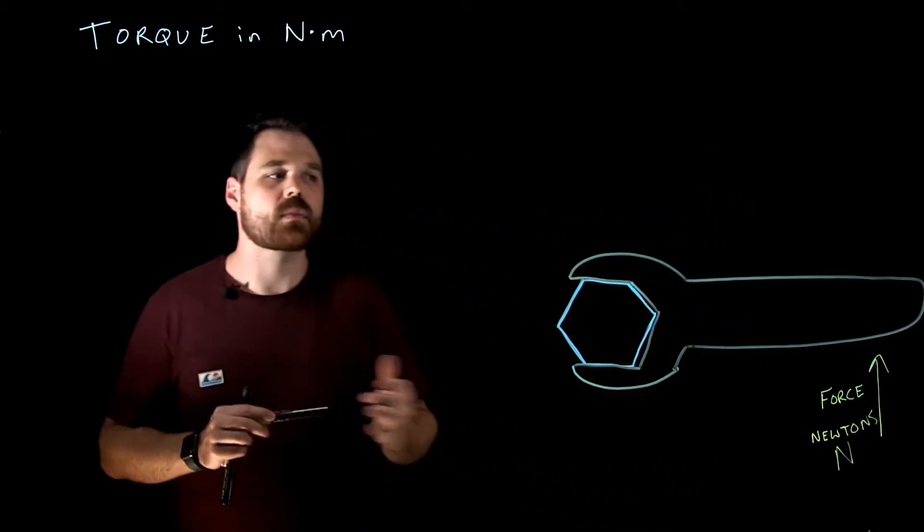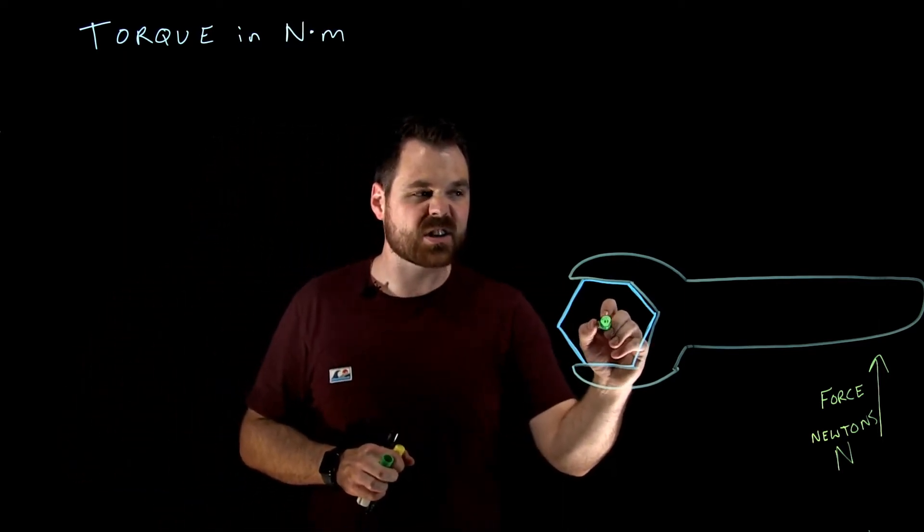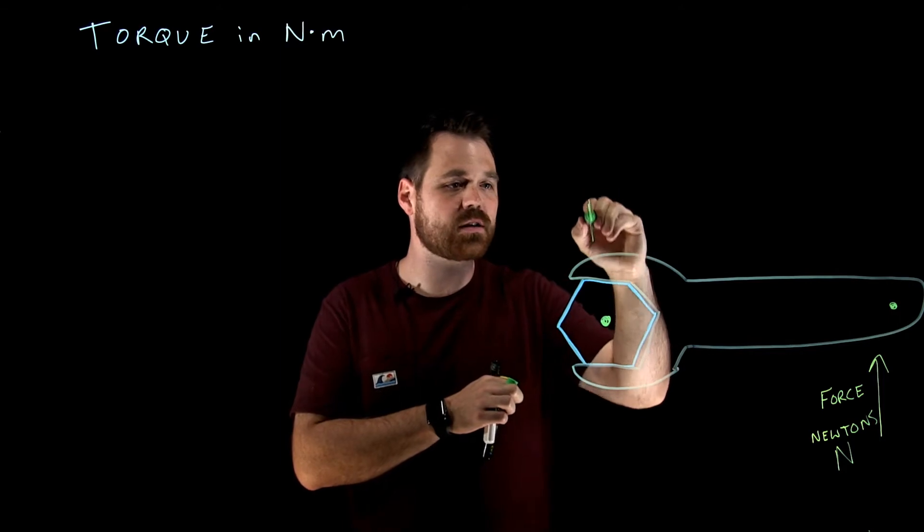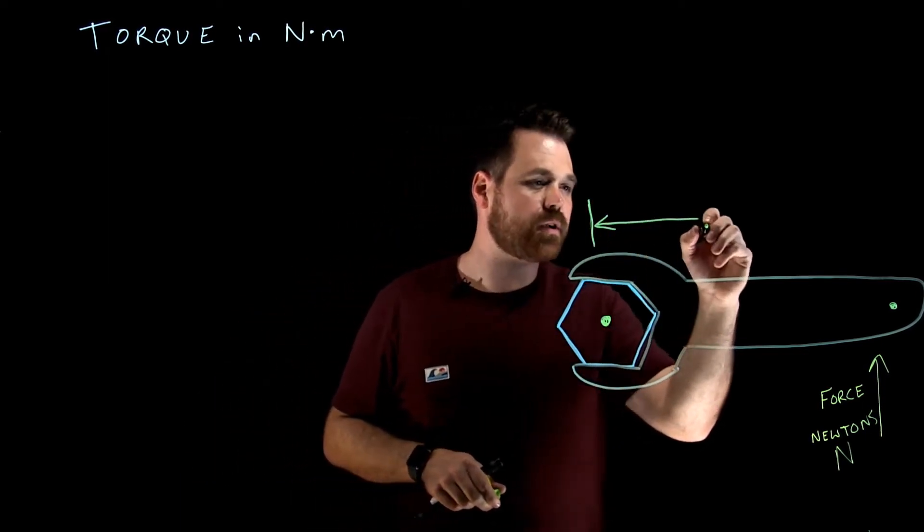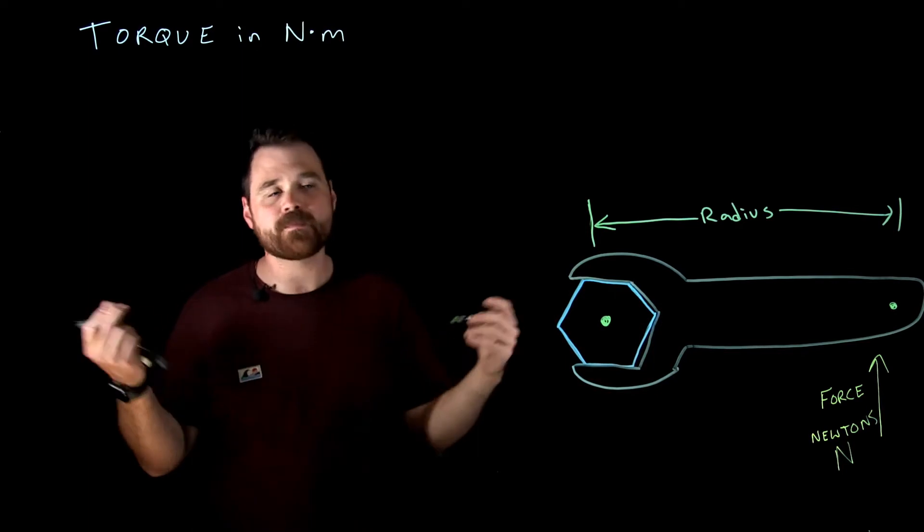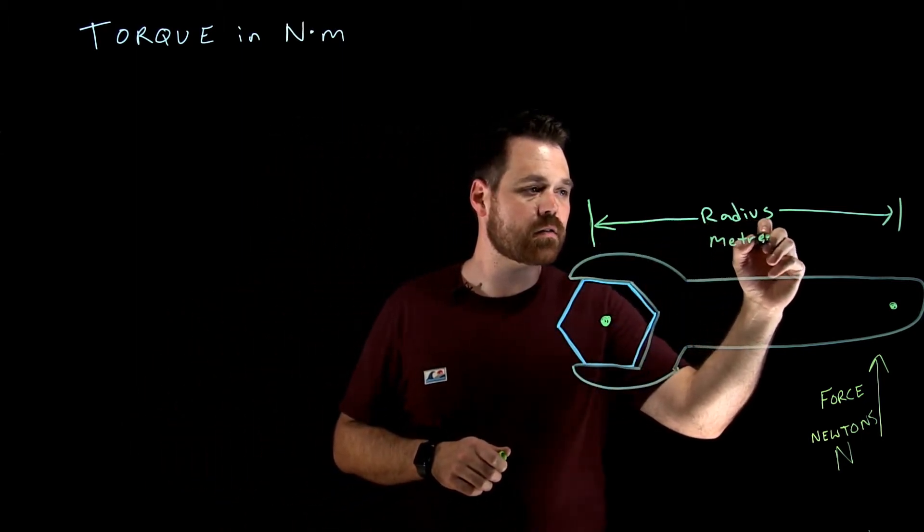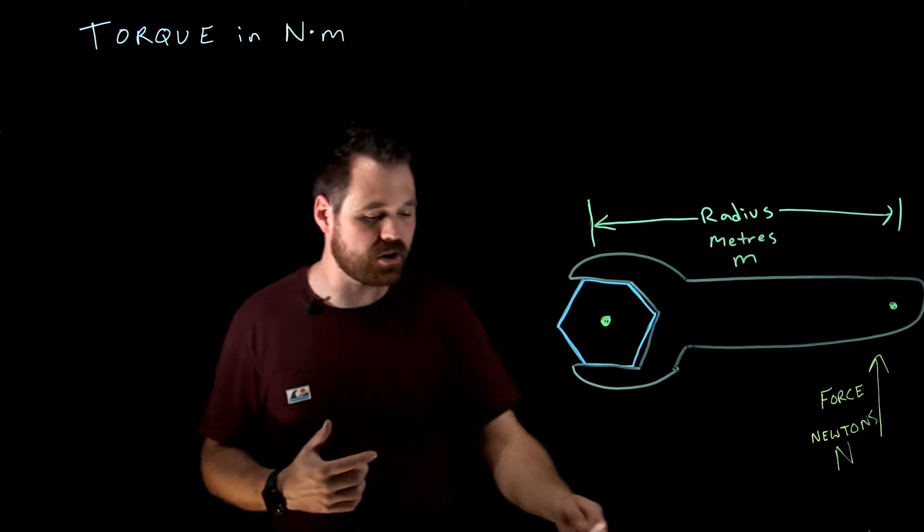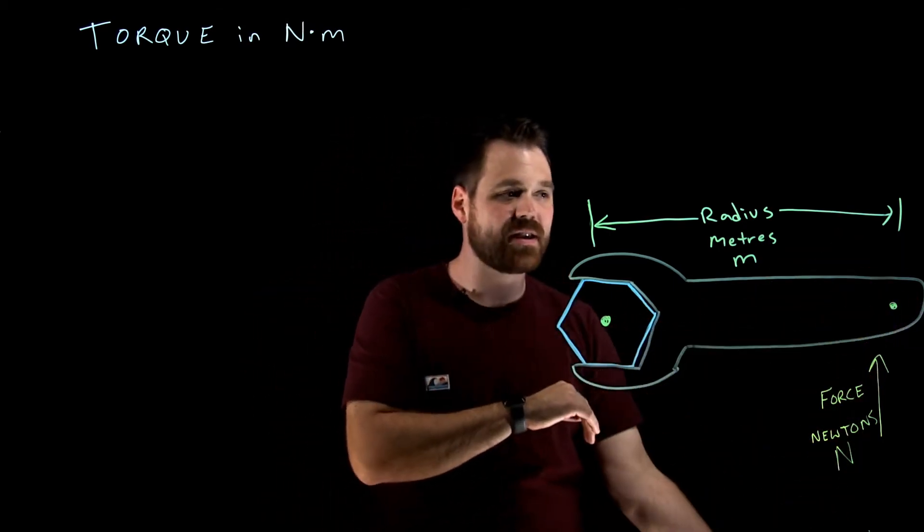Here I would have a center point, and where I apply that force is called my radius. This right here would be called my radius, sometimes you could hear it called a moment arm. My radius is going to be in meters. Now we're talking a huge wrench obviously if we're talking meters, but this is where my torque comes from. The distance from my pivot point out is called my radius. The actual force that I'm applying is my force.